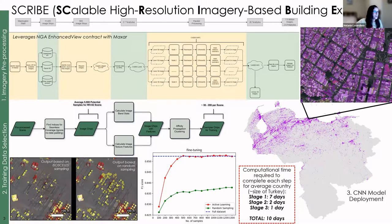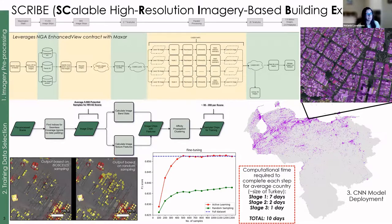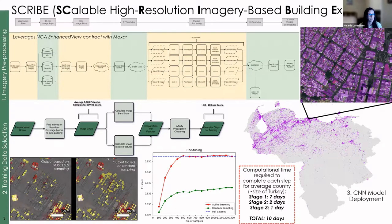This is a good single slide to show what we're doing and how we're extracting buildings. Every good workflow needs an acronym, so we call it SCRIBE — Scalable High Resolution Imagery Based Building Extraction. There are three primary components. Imagery preprocessing is a really big chunk. We receive raw imagery from Maxar Level 1B and do all preprocessing in-house. To date, we've got over three petabytes of imagery, and we handle all of that preprocessing in-house to get to a Level 3A product.